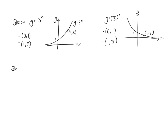We're going to sketch y equals 4 to the power of (x plus 1), minus 2. If this graph had nothing else going on, it would be (0, 1) and (1, 4) for y equals 4 to the x. Working from left to right, the plus 1 in the bracket shifts it 1 point to the left, so our x values become 1 value to the left — giving us (minus 1, 1) and (0, 4).